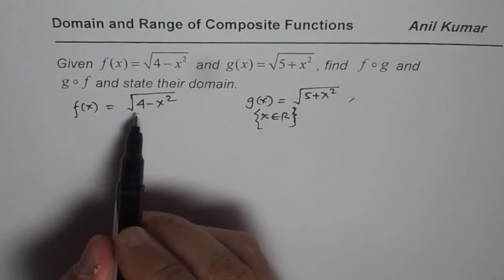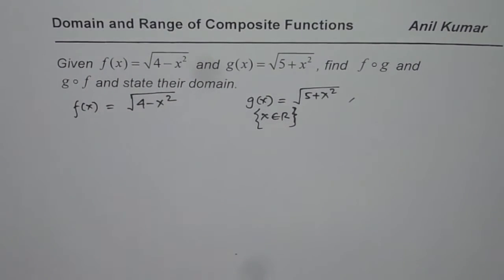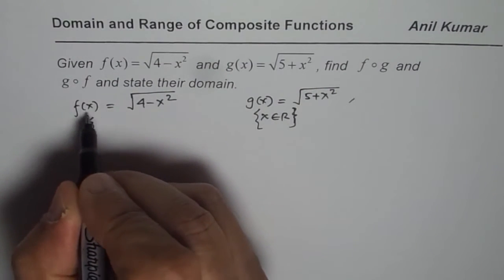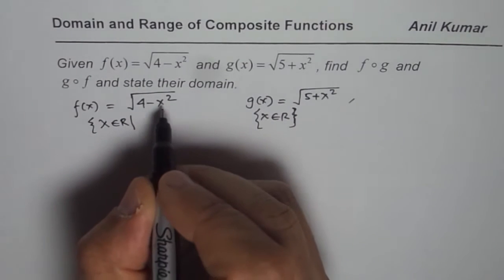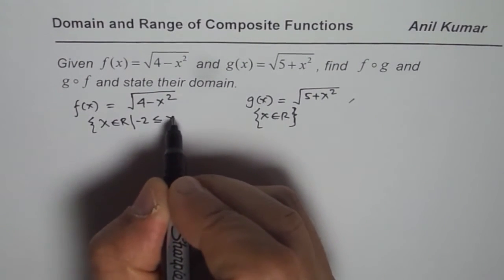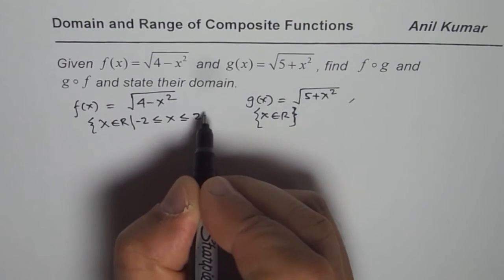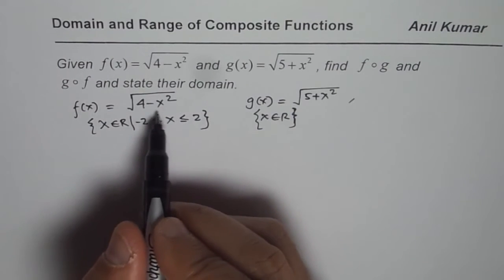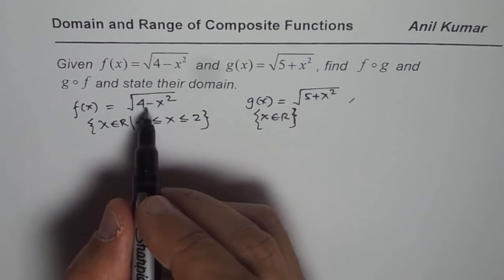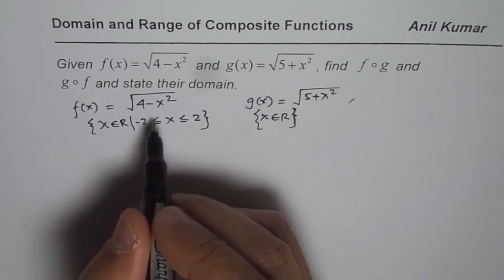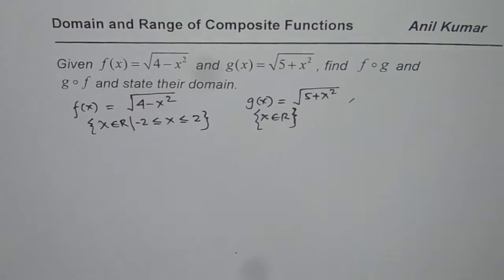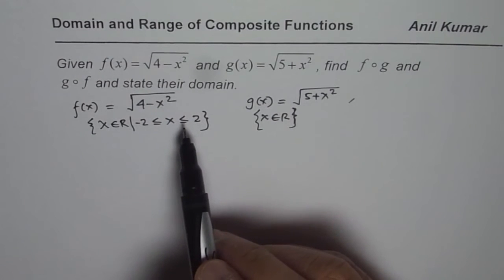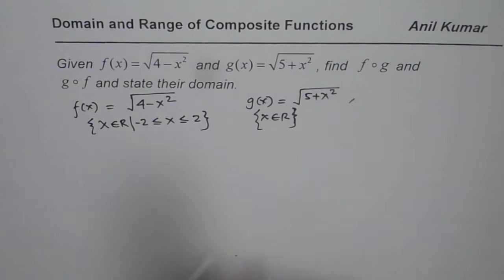However, for f(x), we need 4 minus x squared to be greater than or equal to 0. So the domain of f(x) is x belongs to real numbers where x is greater than minus 2 and less than plus 2. If x squared is greater than 2, then 4 minus x squared becomes negative. But the main question here is not to find the domain of these individual functions, but to find the domain of the composite functions.